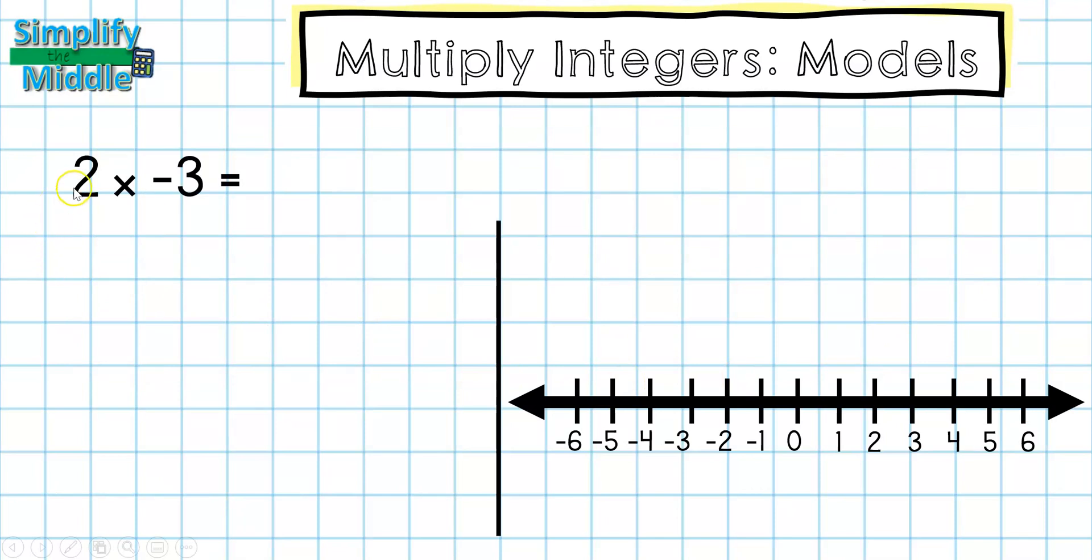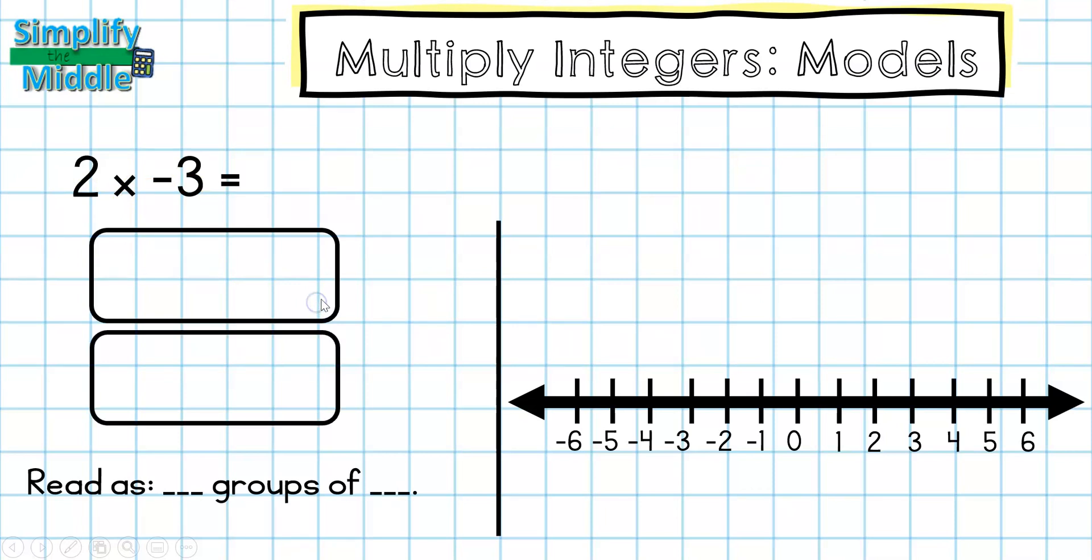On this problem, I have two groups of negative 3. So I'm going to create two groups, and in each group, I'm going to put three red tiles. And then I will count up what I have, and that will be my answer. So I have six total counter chips here, and they are all red, so that means I have negative 6.